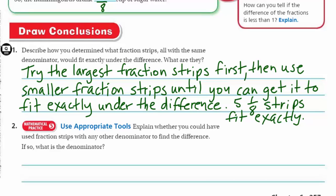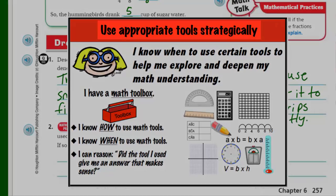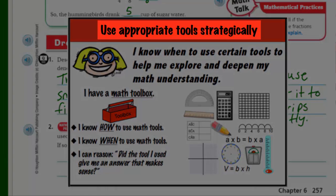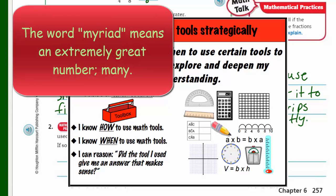Now it looks like we're looking at mathematical practice five. Mathematical practice five says to use appropriate tools strategically. I know when to use certain tools to help me explore and deepen my math understanding. We've talked about the idea of having a math toolbox, how to use those math tools, when to use them. The important thing here is did the tool I use give me the answer that makes sense. We have a lot of different examples from 10 by 10 grids and calculators and rulers and protractors. Obviously there's just a myriad of tools that you can use to deepen that understanding, so using appropriate tools strategically.